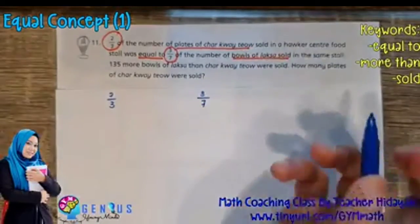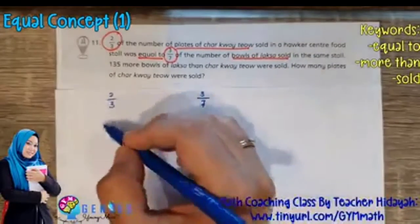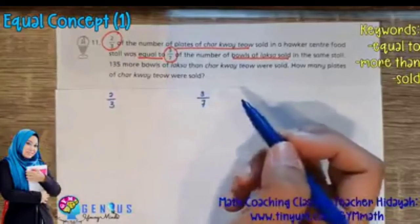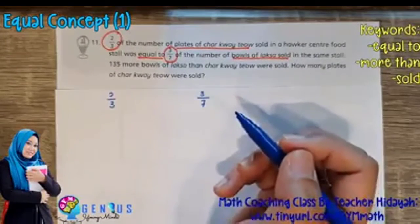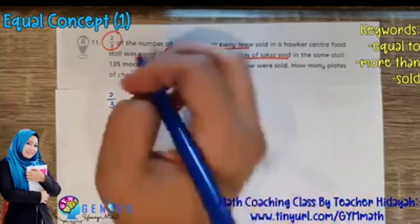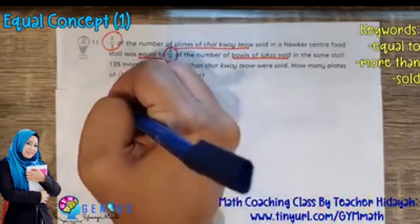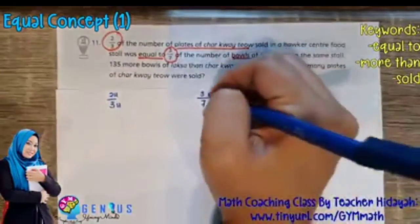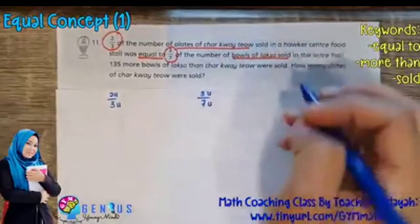So for fractions in its simplest form, which is 2/3 and 3/7, both are in the simplest form, it is already known as in its units form. So this is 2 units and this is 3 units. This is 3 units and this is 7 units.